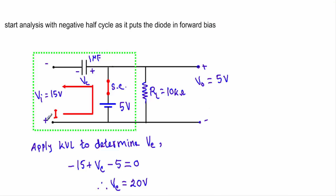During the negative half cycle, this terminal will be positive and this terminal will be negative. We replace the diode with a short circuit. The output voltage is taken across the load resistor RL. A voltage of 5 volts is connected in parallel with the load resistor RL, so I can conclude that as long as the input voltage is in the negative half cycle, the output voltage will be equal to 5 volts.